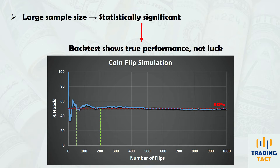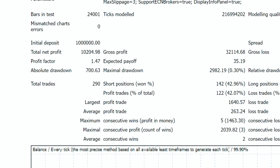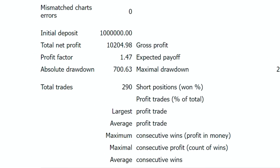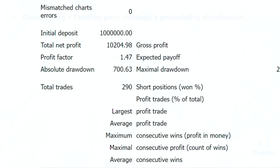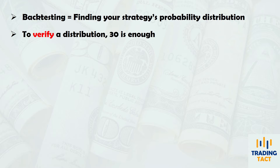So how many trades do you need? You're probably thinking 30 — a number which is mentioned frequently. When you backtest your strategy, you are attempting to characterize its probability distribution. 30 trades is usually sufficient if you're trying to verify a distribution you have already characterized.